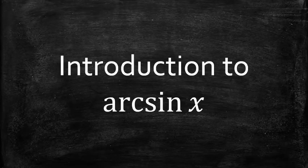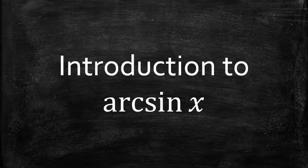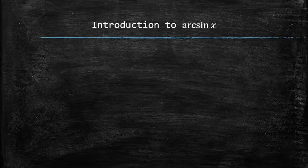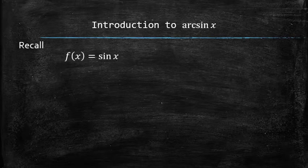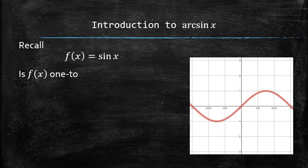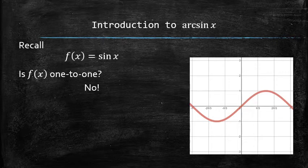Next, we will introduce a new function called arcsin. Let's recall the sin function and its graph, and let's answer the following questions. Is this function one-to-one? The answer is no, because it doesn't pass the horizontal line test.